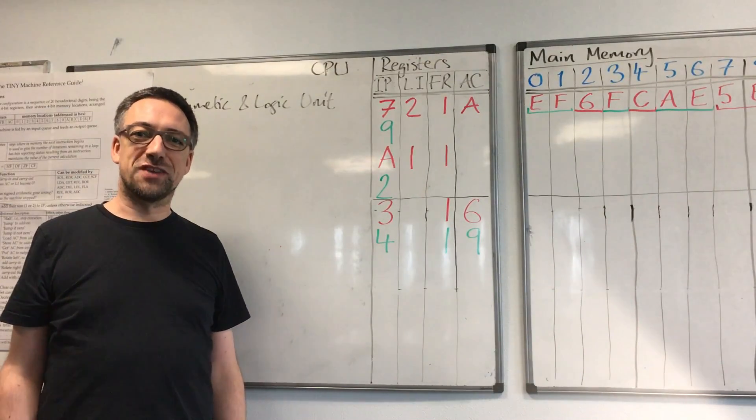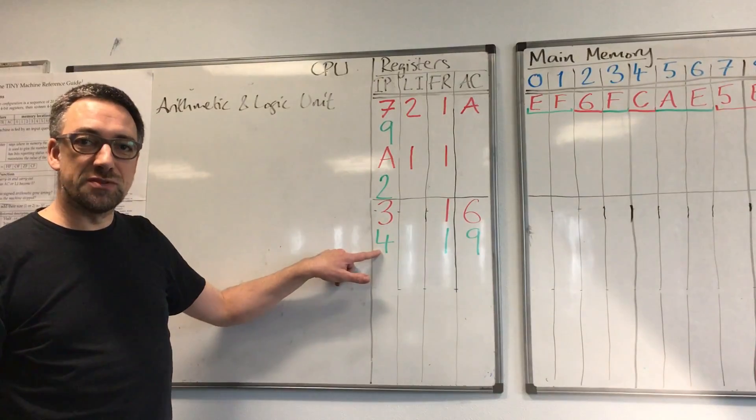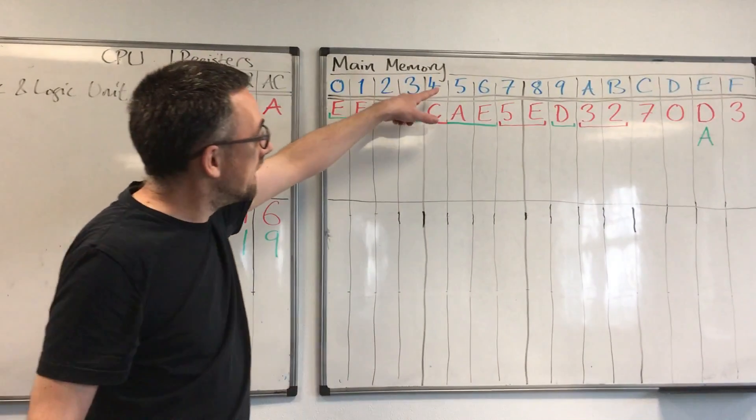Let's have another fetch execute cycle of the tiny machine. In this configuration, the instruction pointer is 4. So we go to main memory, to location number 4.